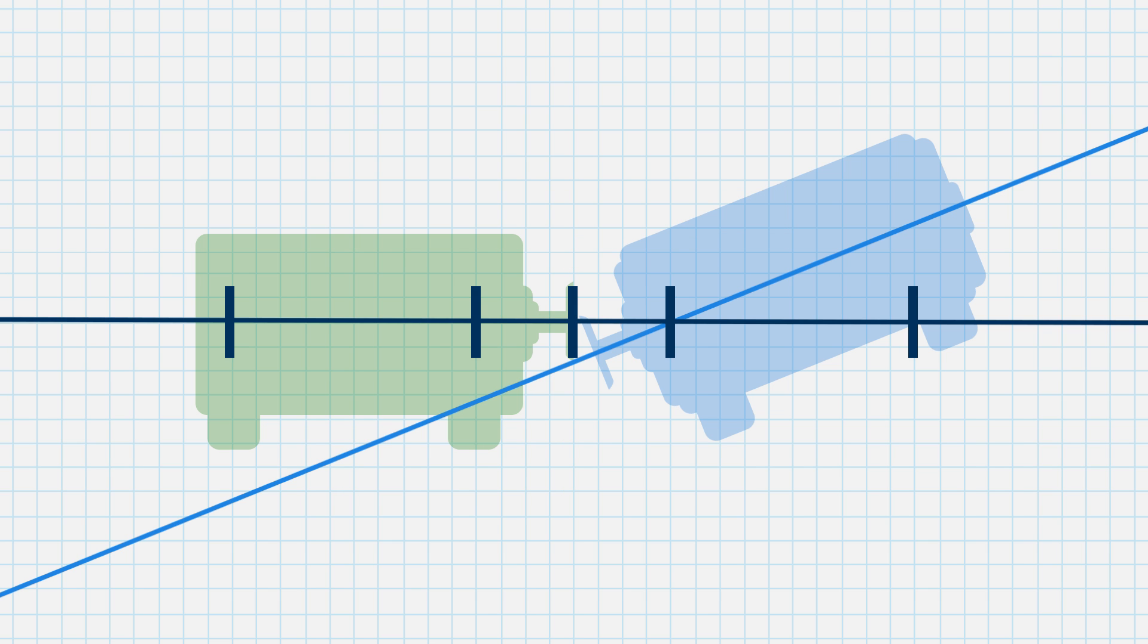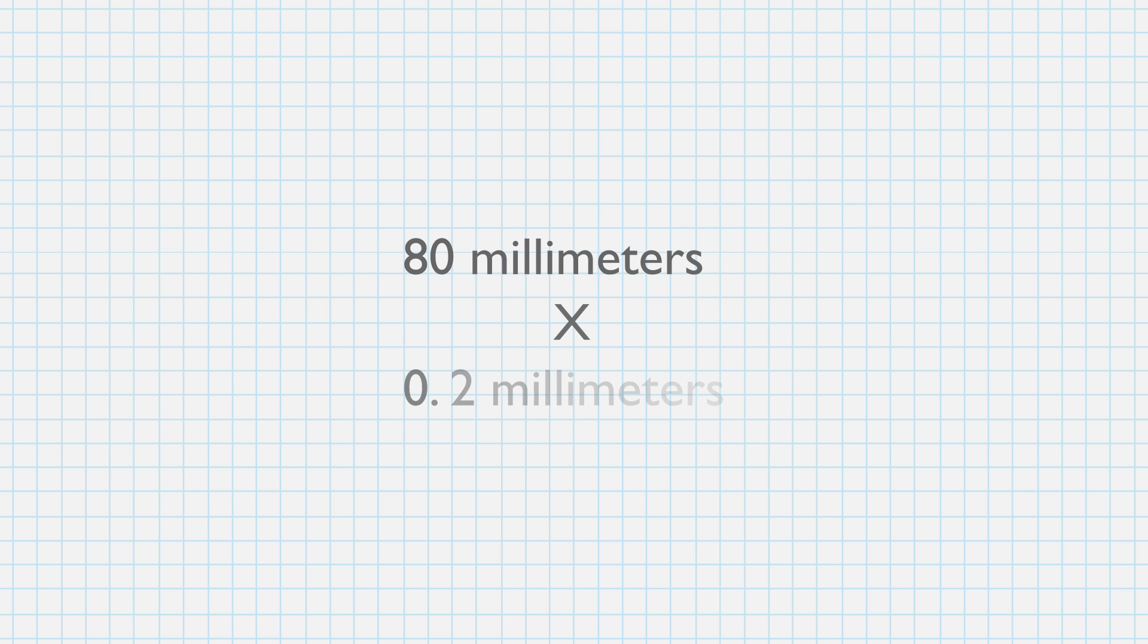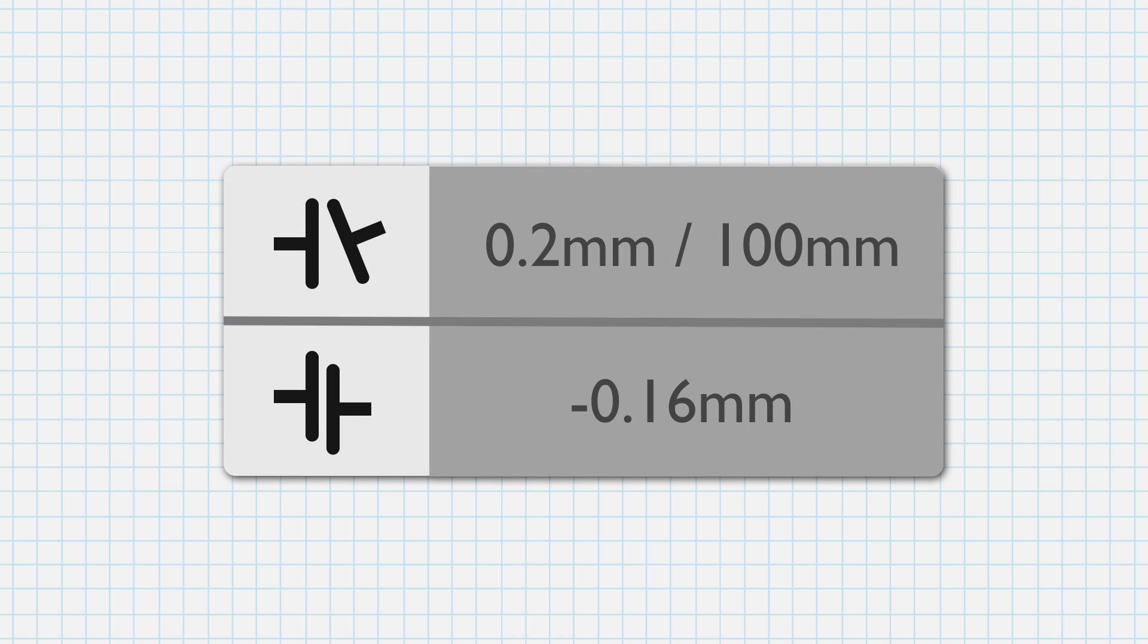The graph shows the offset is 0.4 mm at the back feet and 0 mm at the front feet. We know that the offset changes by 0.2 mm for every 100 mm we move along the shaft. The coupling center is 80 mm from the front feet. Over those 80 mm, the moveable shaft will drop an additional 0.16 mm (80 mm times 0.2 mm). Therefore, the offset at the coupling center is minus 0.16 mm.